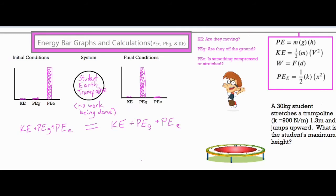For this specific problem, we don't need the zero terms on either side, so we take the two types of energy that remain, expand them into their formulas, plug in everything we know, and solve for the maximum height.